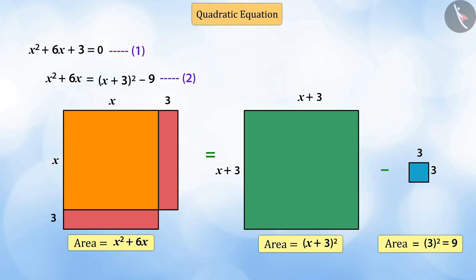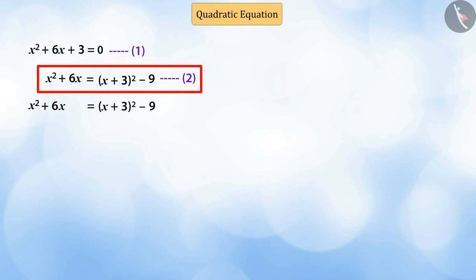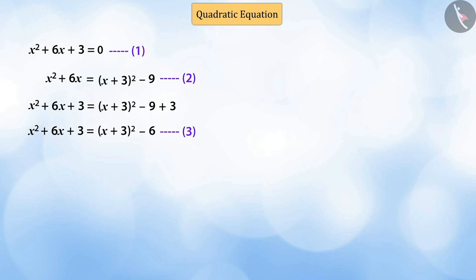On comparing the given equation to the quadratic equation, x square plus 6x plus 3 equals to 0, we see that there is a shortage of plus 3 in equation 2. Hence, adding 3 to both sides of equation 2. In this way, the given equation can be written as a complete square as x plus 3 the whole square minus 6 equals to 0.